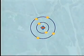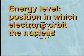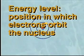Electrons hold specific positions orbiting the nucleus. We refer to the position in which electrons orbit the nucleus as an energy level.